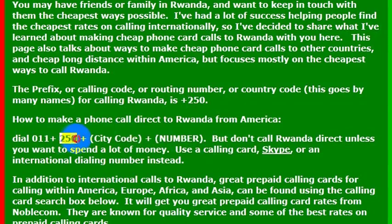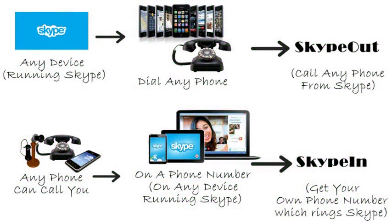Again, the country code for Rwanda is 250, but I wouldn't really recommend calling direct — your phone company will charge you a lot of money. If you want to call a phone number, I really recommend using Skype. We detail how to make free and low cost calls using Skype in other videos.